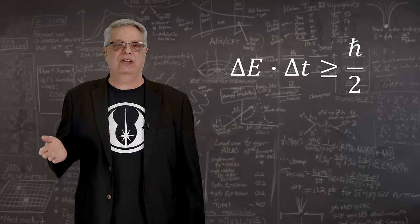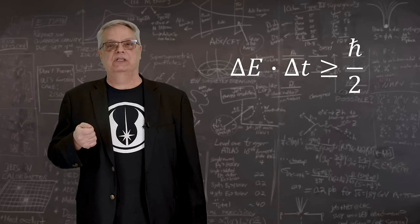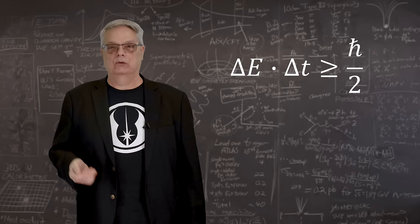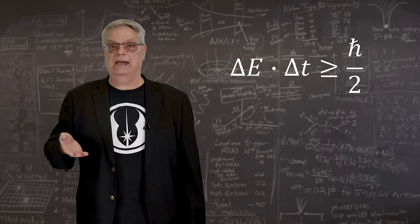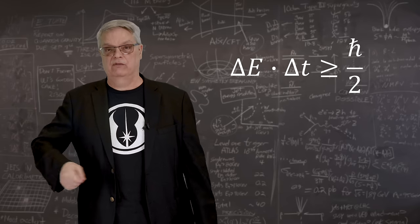which says the lifetime of a thing, which is Δt, times the distance in energy from normal, which is ΔE, has to be greater than this constant called the reduced Planck constant, or ℏ, divided by two.